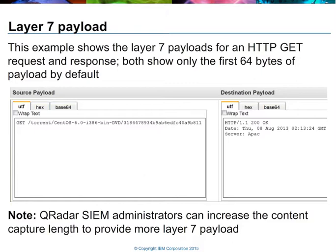In this particular case, we're dealing with an HTTP interaction. So in the source payload section, we actually see the HTTP GET as well as the corresponding URL. Then in the destination payload, we actually see the response back from the web server. By default, QRadar only captures the first 64 bytes of payload. This can be increased by your administrator.